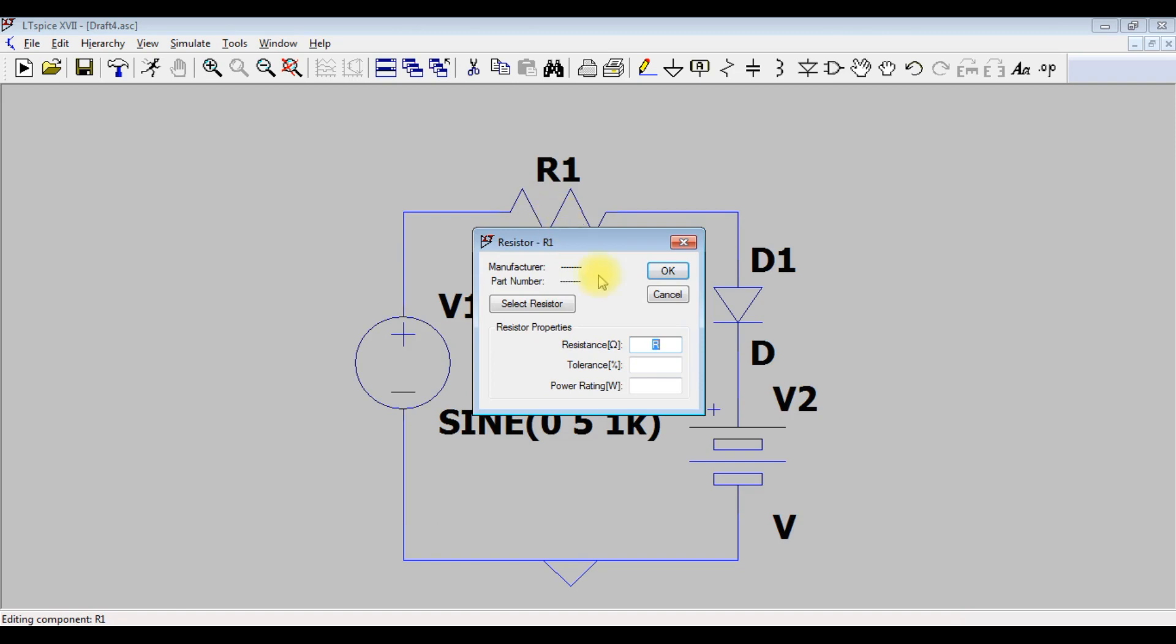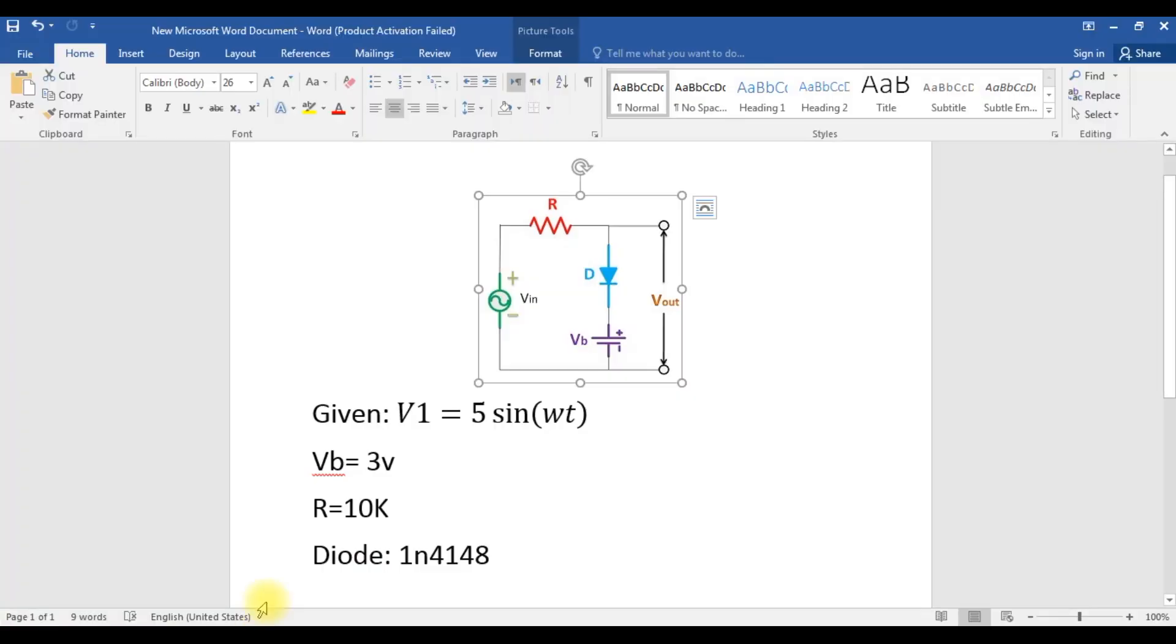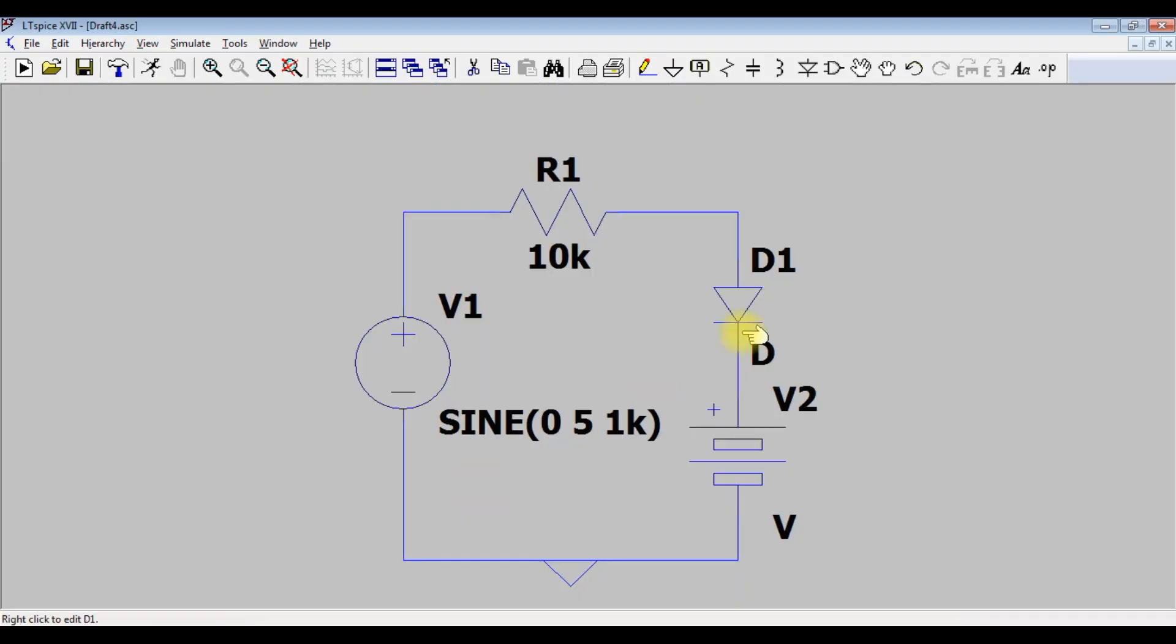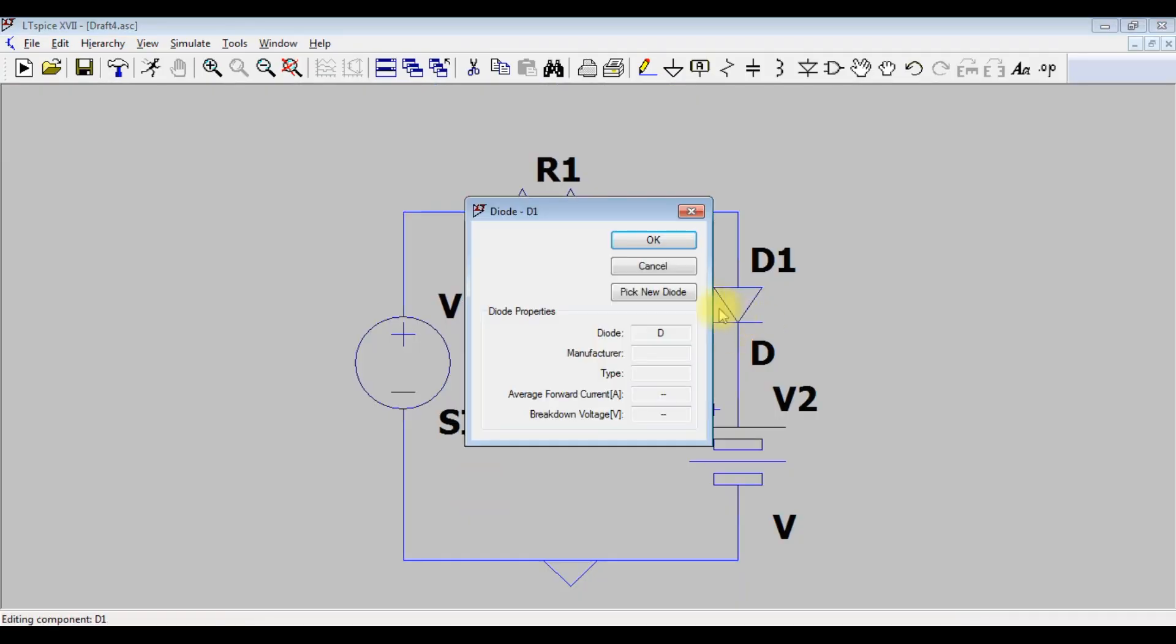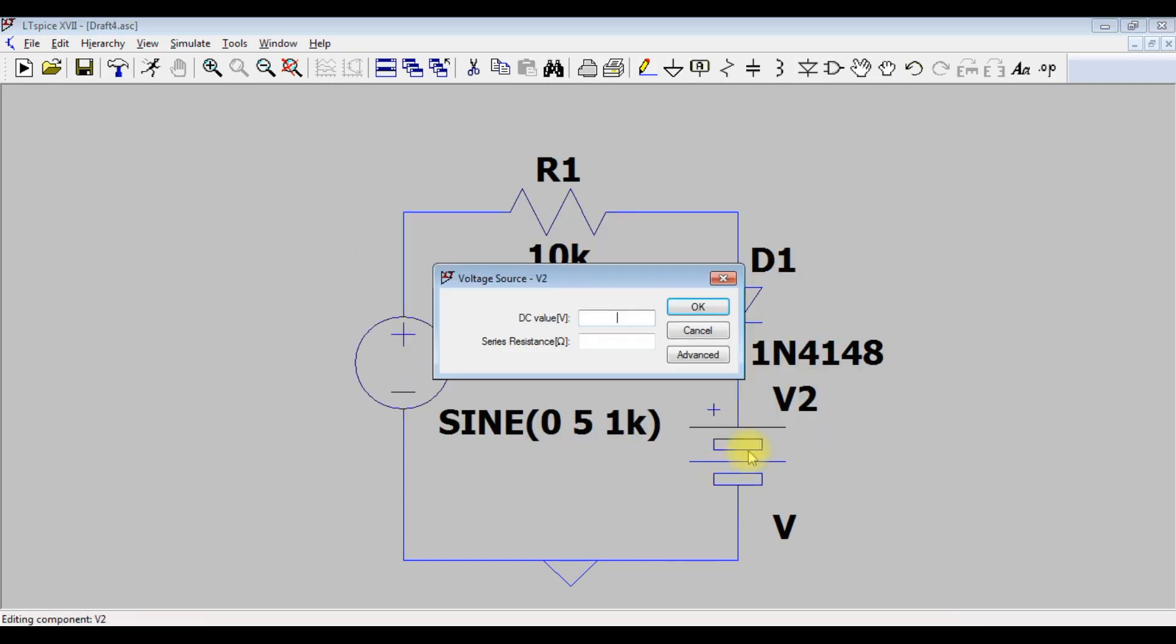The resistor value, right click, 10k. The diode type is silicon 1n4148. Right click on diode, pick new diode, choose 1n4148. Right click, 3 volts DC, okay.